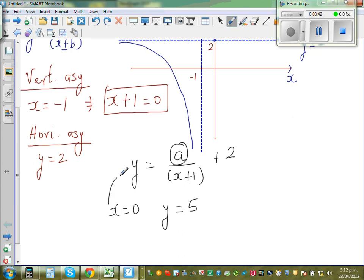So five is equal to a over zero plus one is one, plus two. So this is equal to a plus two. So I'll use your logic, so a should be three. A is equal to three.